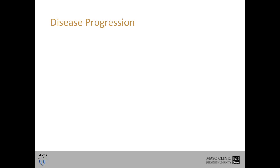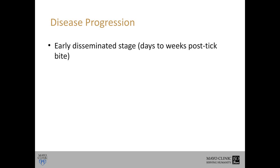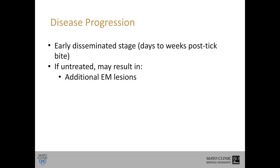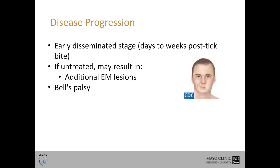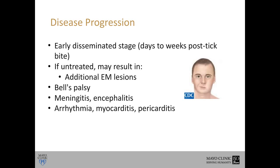If disease is not caught at this point, it will progress in most patients to what we call an early disseminated stage, days to weeks after the tick bite. This can result in more erythema migrans lesions, Bell's palsy — a paralysis on one side of the face — and more serious manifestations such as meningitis, encephalitis, and even fatal arrhythmias, myocarditis, and pericarditis. Early recognition and treatment is key; you do not want disease to progress to this stage.